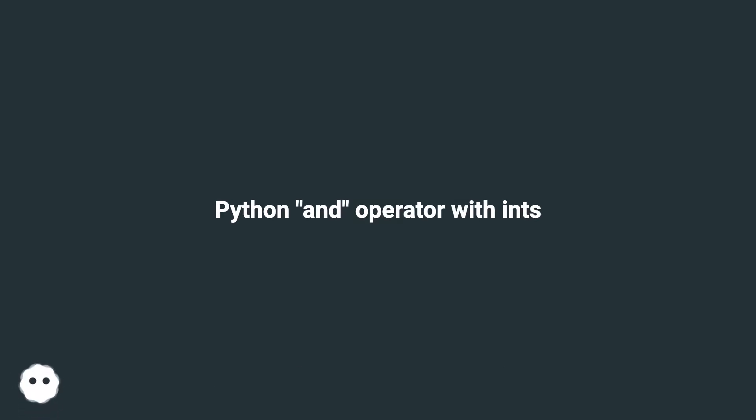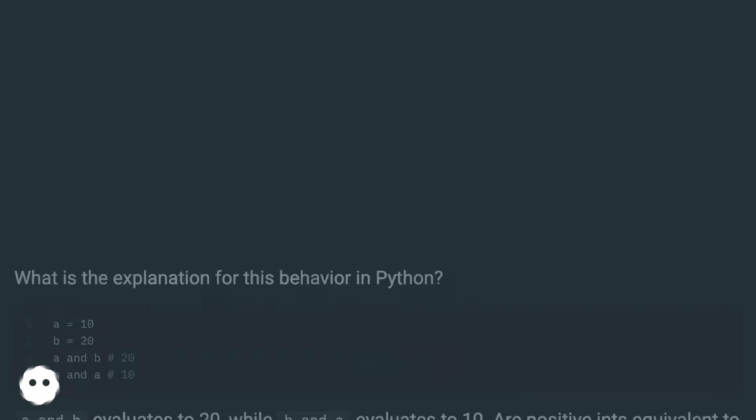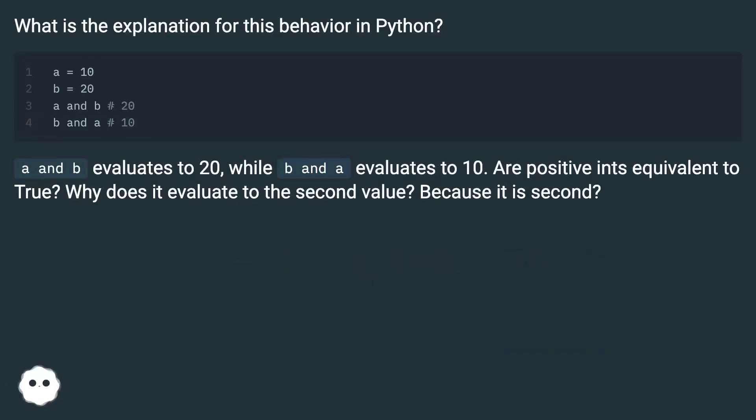Python and operator with ints. What is the explanation for this behavior in Python? A and B evaluates to 20, while B and A evaluates to 10. Are positive ints equivalent to true? Why does it evaluate to the second value? Because it is second?